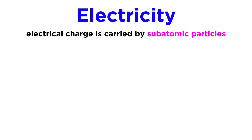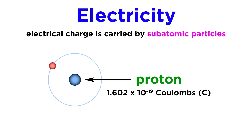Before we dive into electrochemical cells, let's first summarize some terms and concepts associated with electricity. First, we have to understand electrical charge, which is carried by subatomic particles. The SI unit for charge is the coulomb, and one proton carries 1.602 times 10 to the negative 19 coulombs.